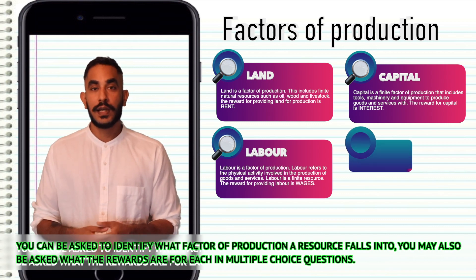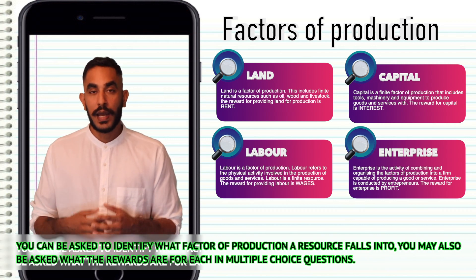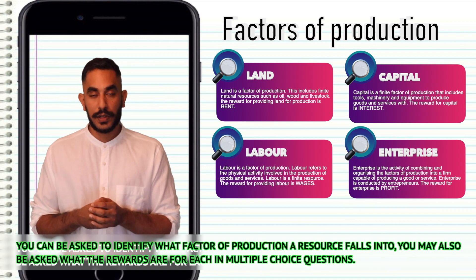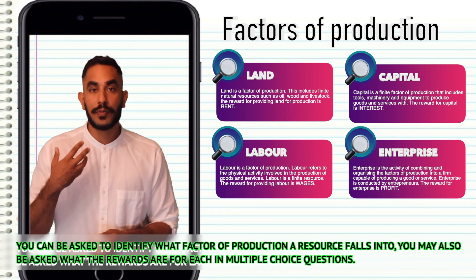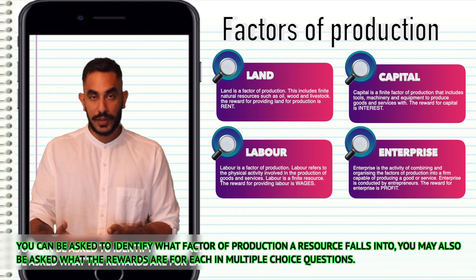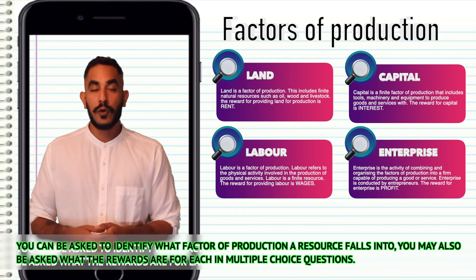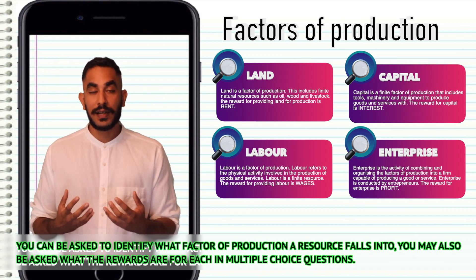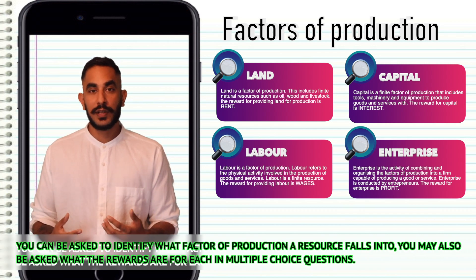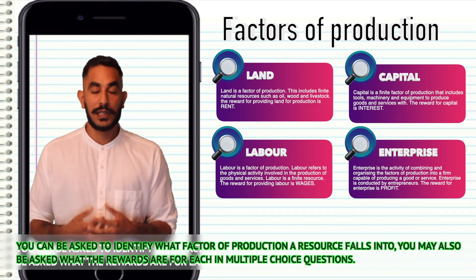Last but not least, to produce something, you need enterprise or an entrepreneur. Enterprise is the act of combining the factors of production, having an idea and taking a risk to form a firm, in order to produce a good or service. For example, Steve Jobs is an entrepreneur who brought together the factors of production to form Apple, who now produce a range of electronic goods. The reward for enterprise is profit.